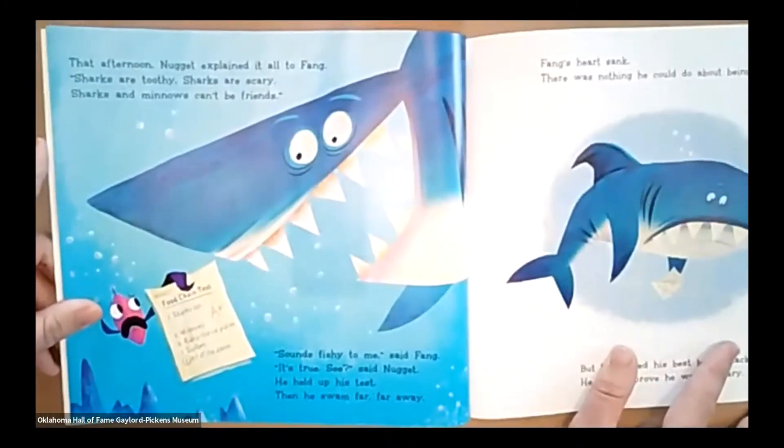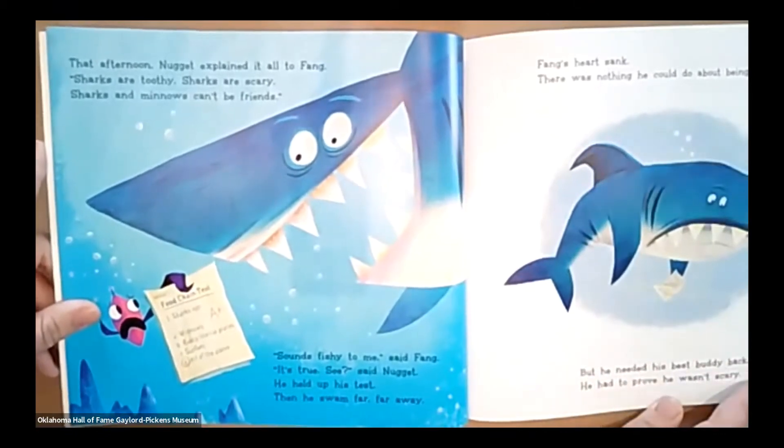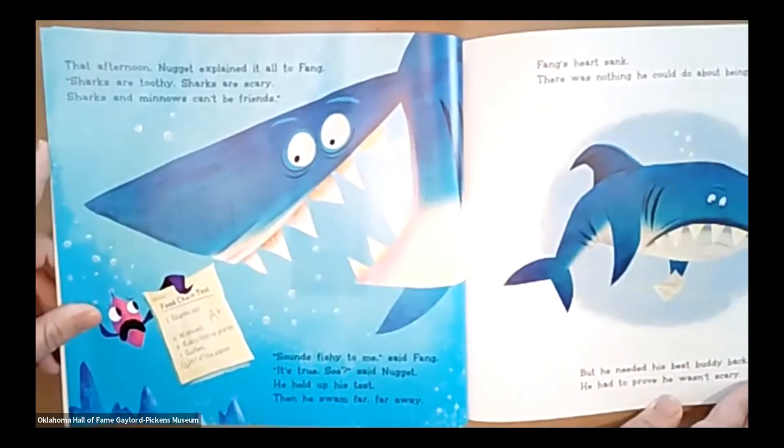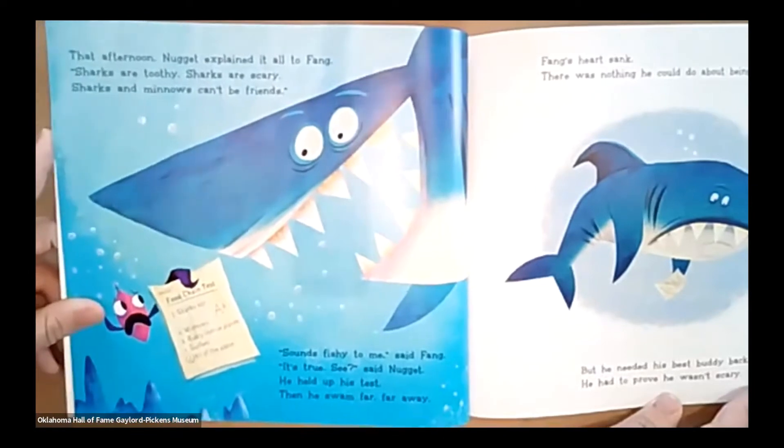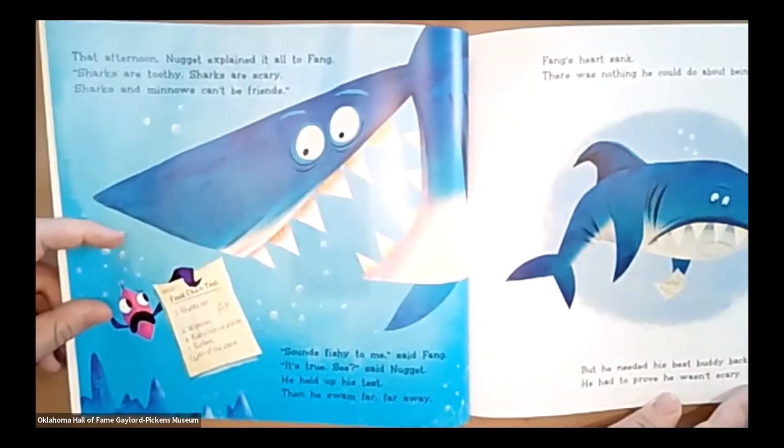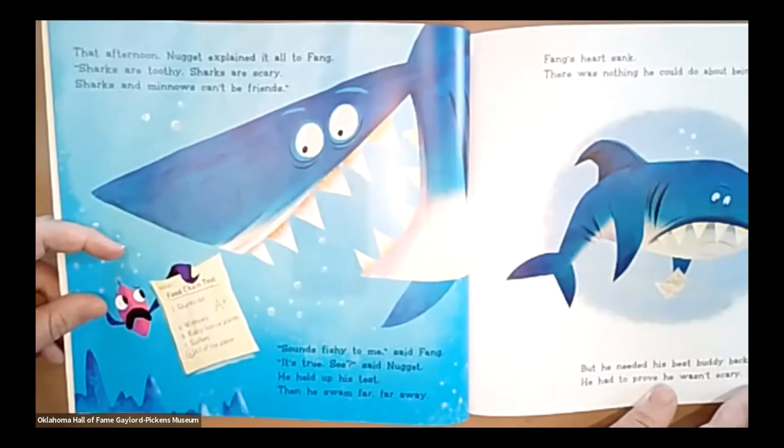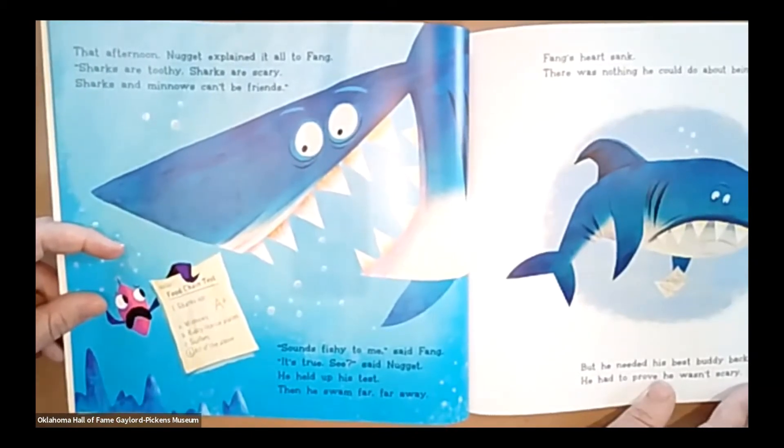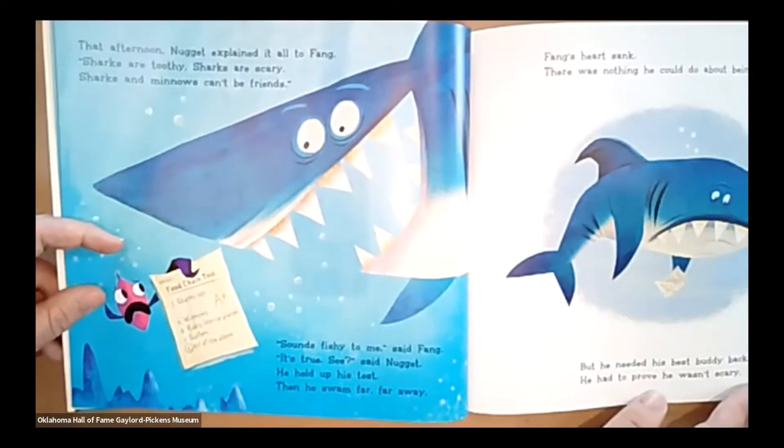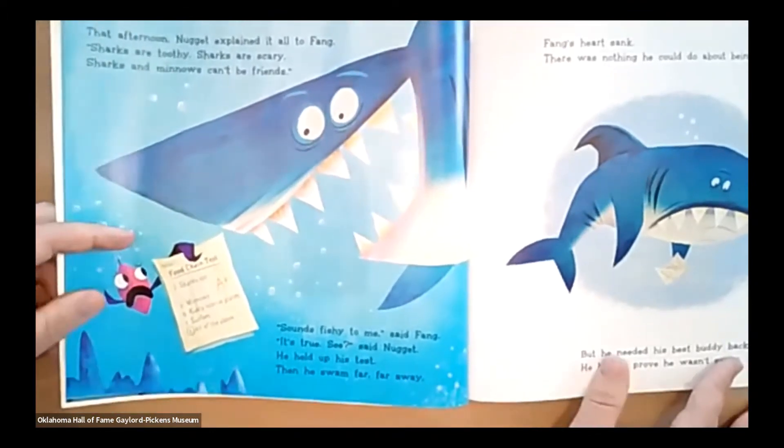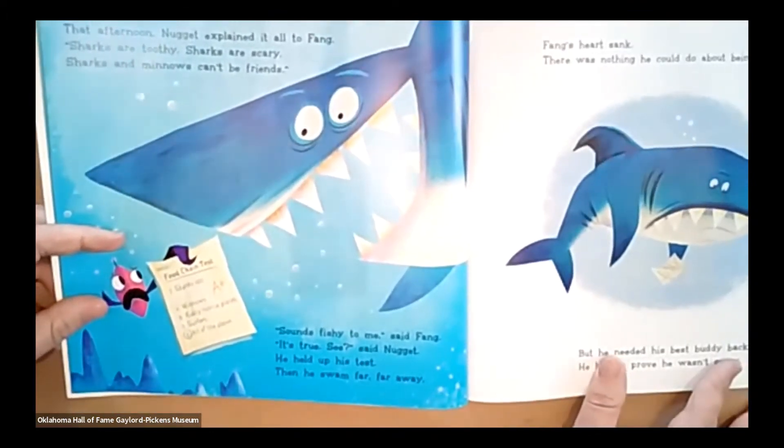All of them are saying he can't be friends with the shark. That afternoon, Nugget explained it all to Fang. Sharks are toothy. Sharks are scary. Sharks and minnows can't be friends. Sounds fishy to me, said Fang.